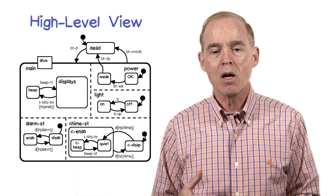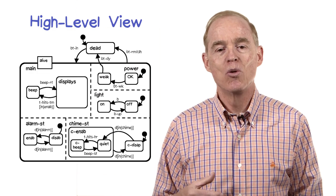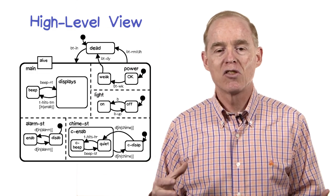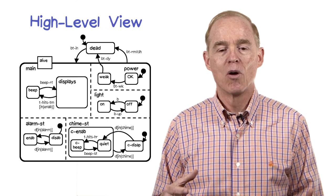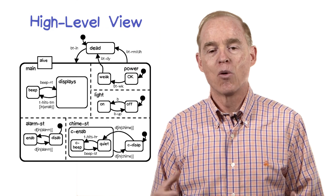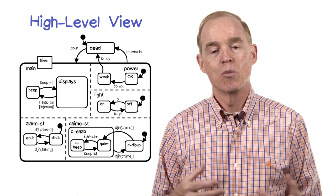And then there are five concurrently executing sub machines inside the alive state, each of which has their own activities going on. And there's even further nesting down in the lower right hand concurrent machine.